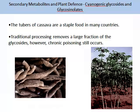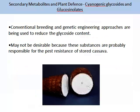Another example of cyanogenetic glycosides occurs in the tubers of cassava, which is a staple food in many countries. Traditional processing removes a large fraction of the glycosides; however, chronic poisoning does still occur. Conventional breeding and genetic engineering approaches are being used to reduce the glycoside content, though this may not be desirable because these substances are probably responsible for the pest resistance of stored cassava.